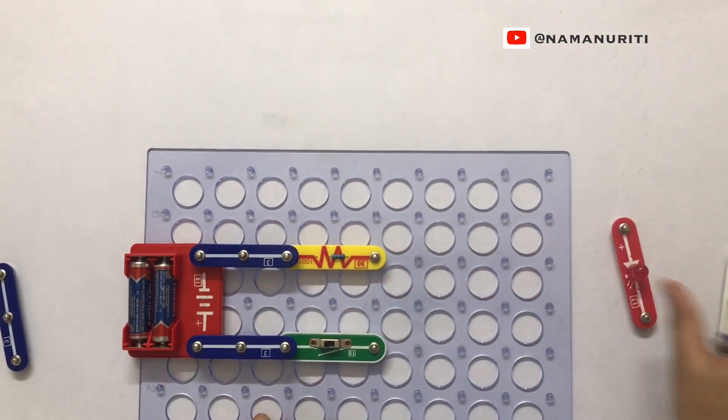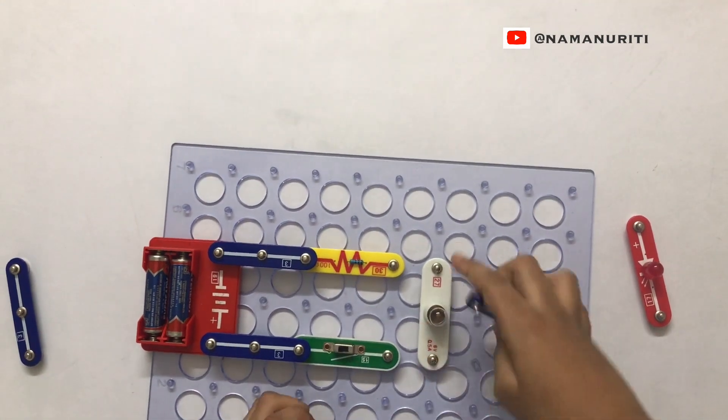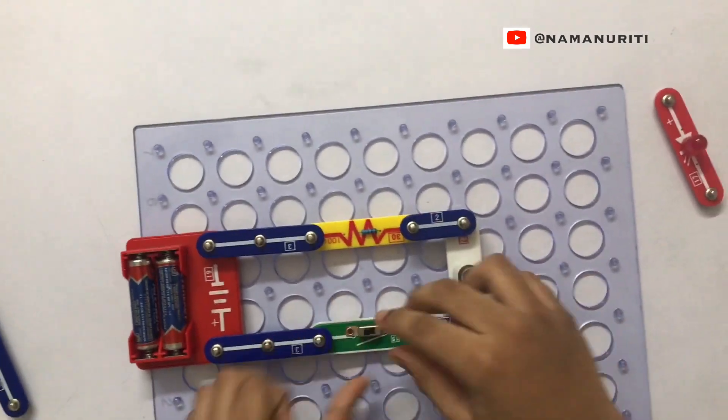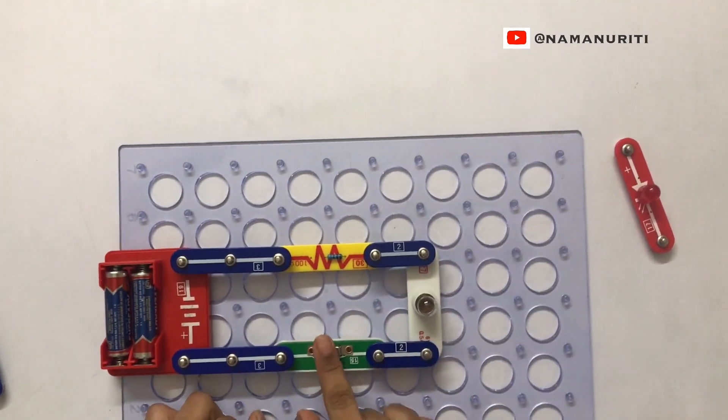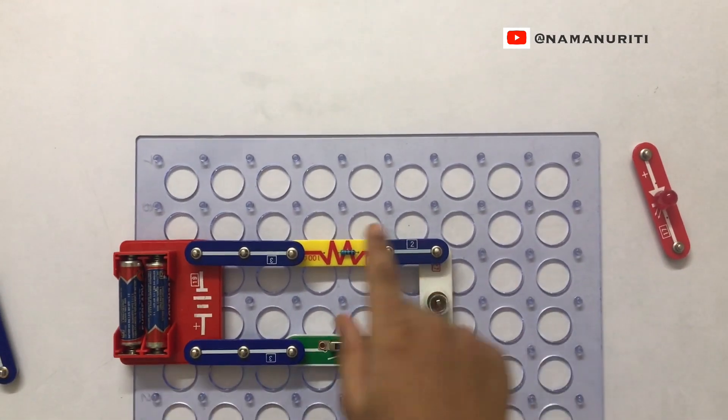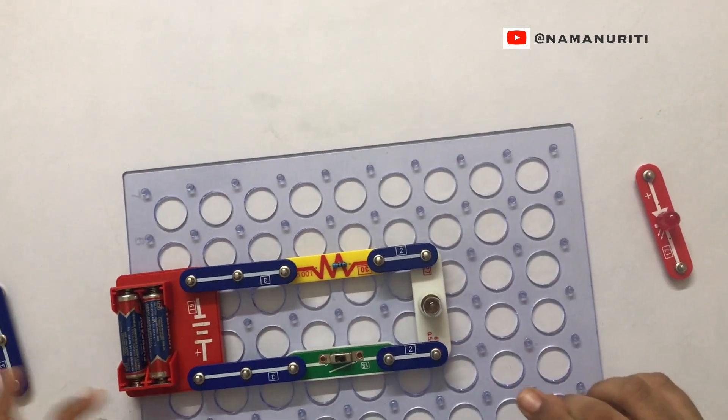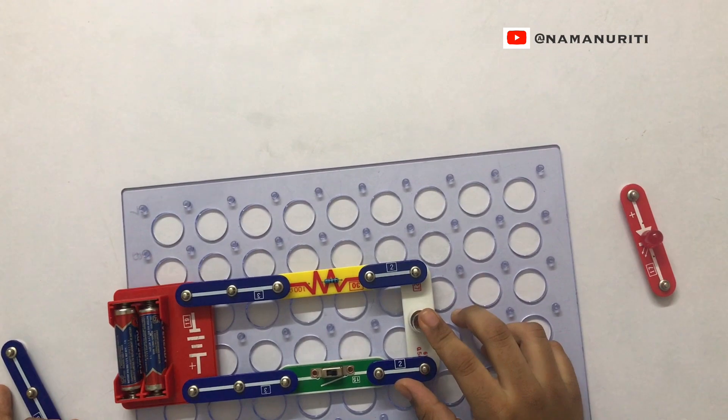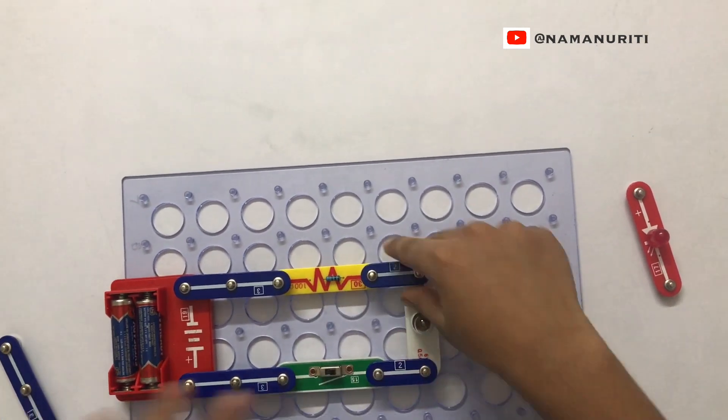Now let's try this with a bulb. Hey, it's not working. Why? Because there's a resistance here. Because it gives, it needs more voltage. But because it's reducing the voltage, it won't glow.